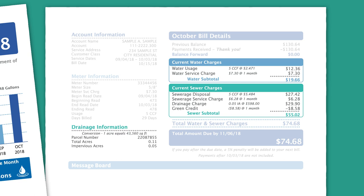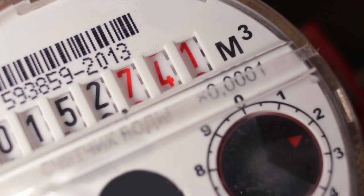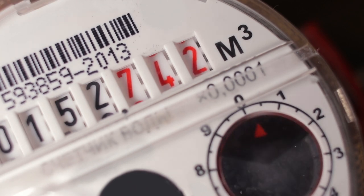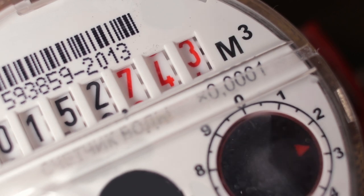Your water usage is based on the amount of water used during a billing period. DWSD calculates your water usage based on the monthly meter reading at your home. The meter electronically sends hourly readings to our billing system.